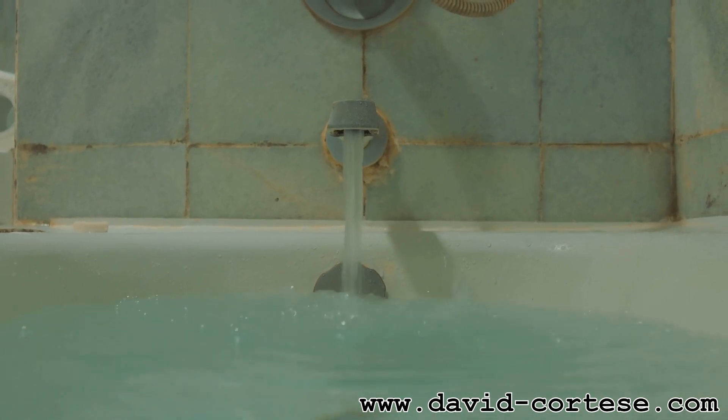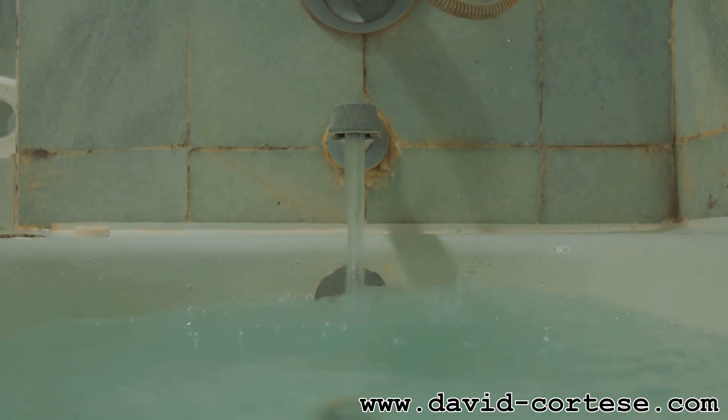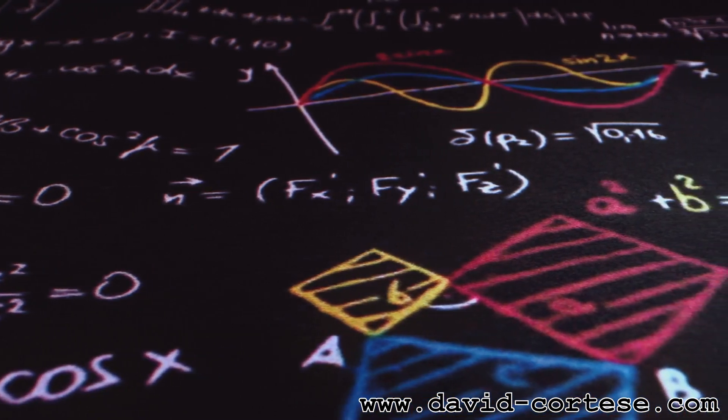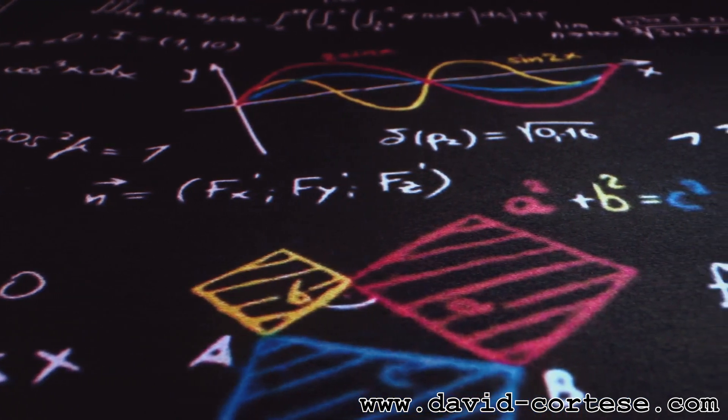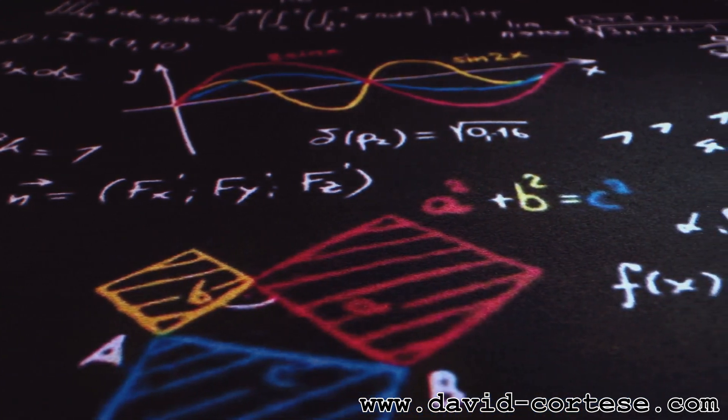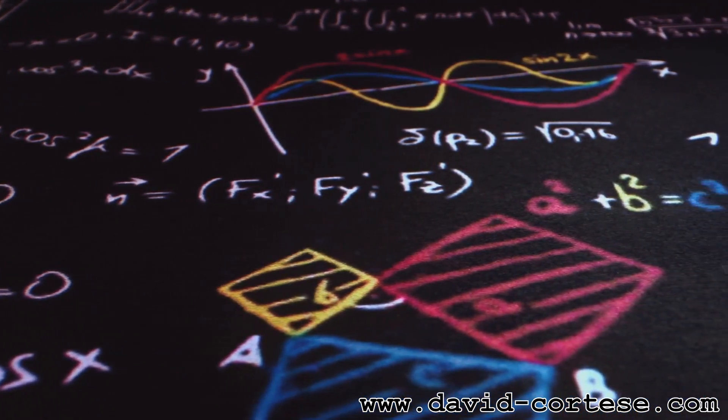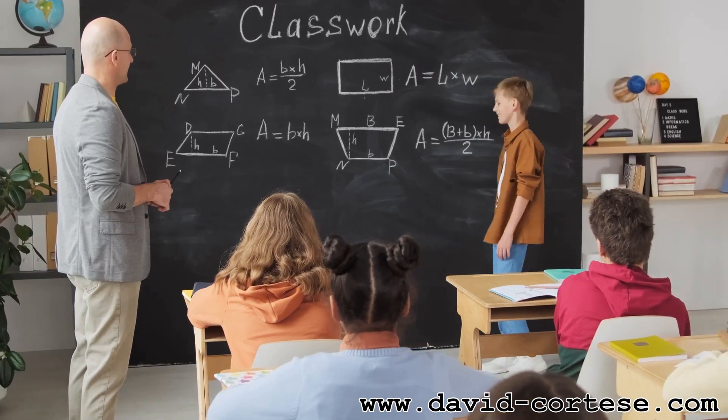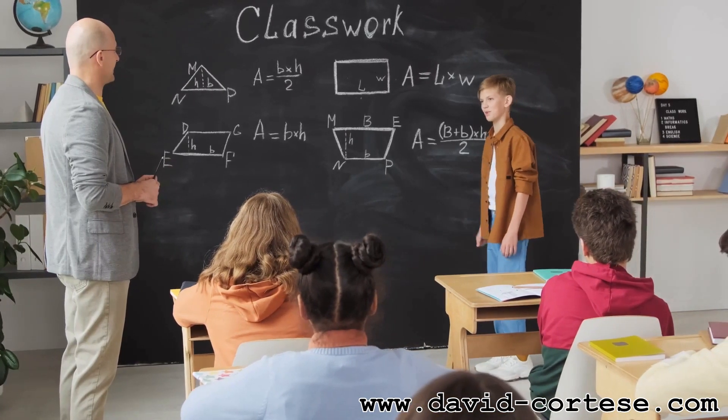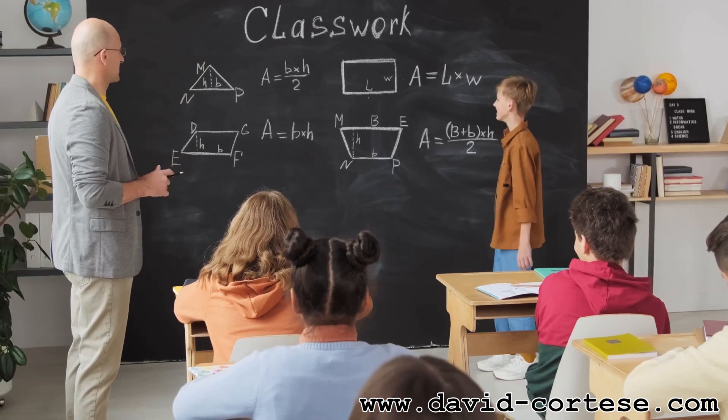Imagine you're filling a bathtub. The water flowing from the faucet represents a rate of change—the amount of water entering the tub per unit of time. The integral of this rate of change over a certain period would tell you the total amount of water that flowed into the tub. Graphically, an integral represents the area under a curve. For example, if we graph the speed of a car over time, the area under the curve would represent the total distance traveled. Integrals provide a powerful tool for calculating quantities that are difficult or impossible to measure directly.